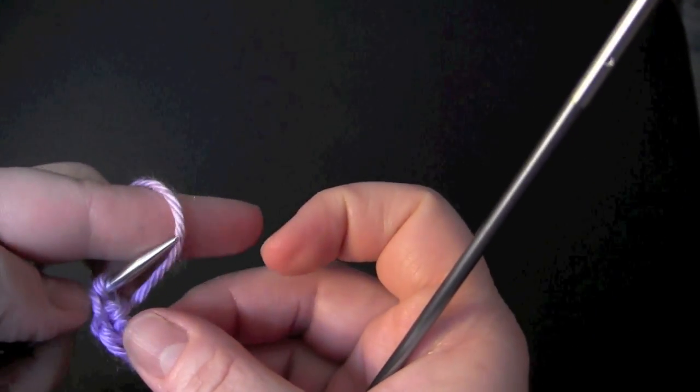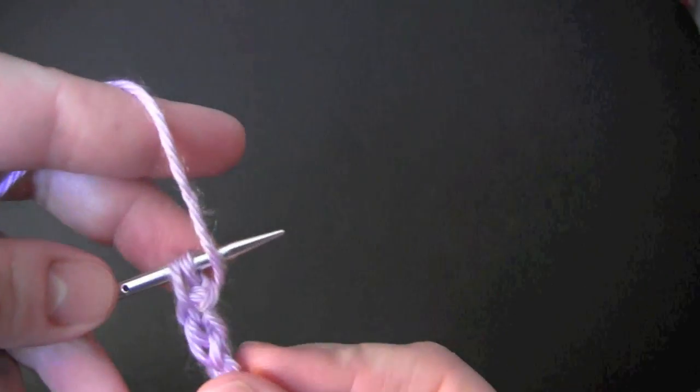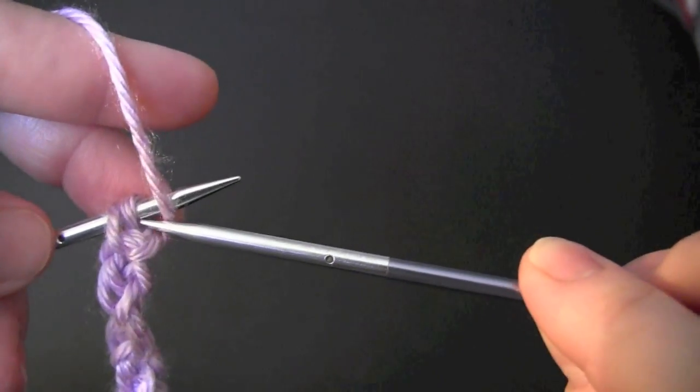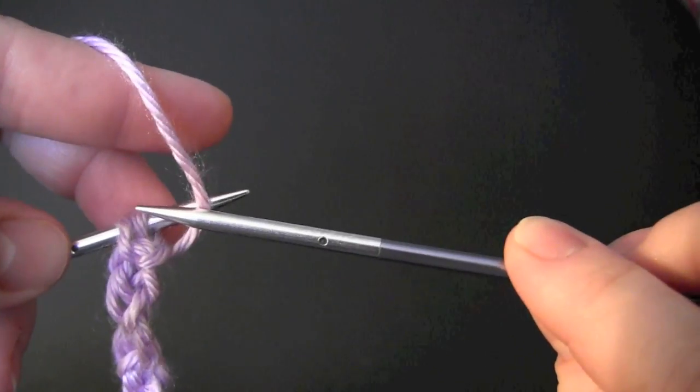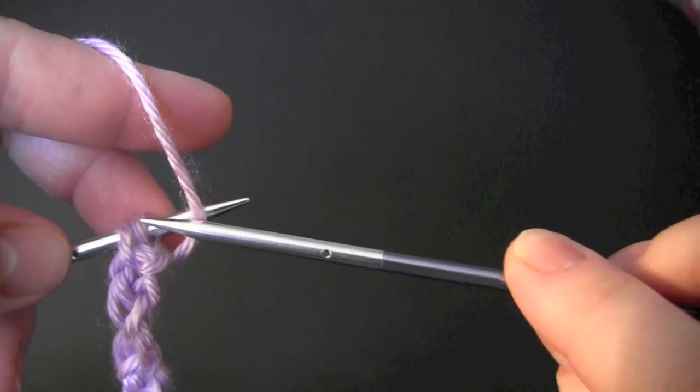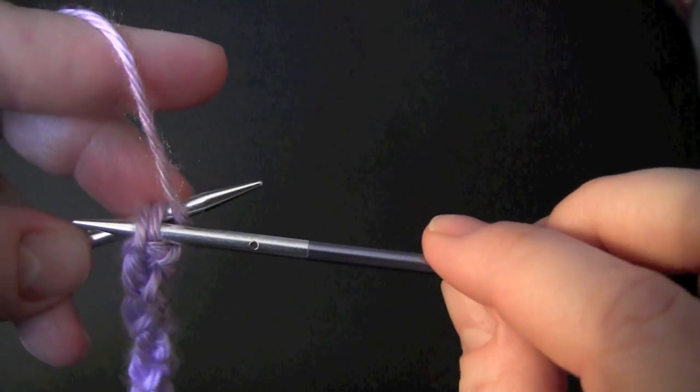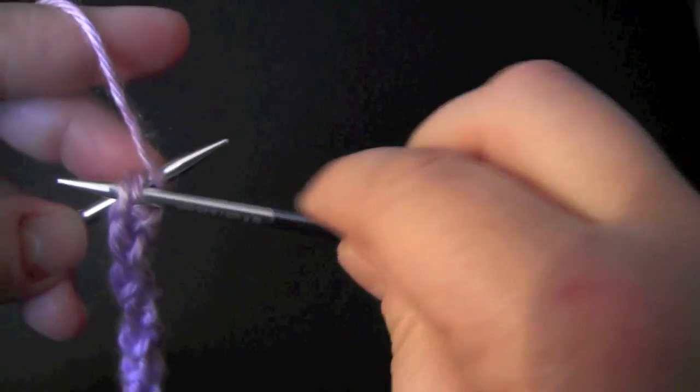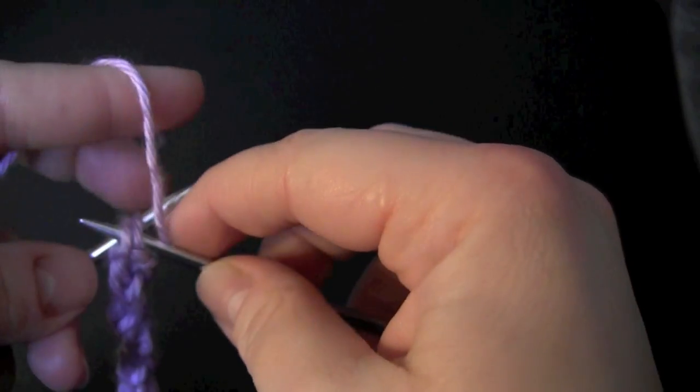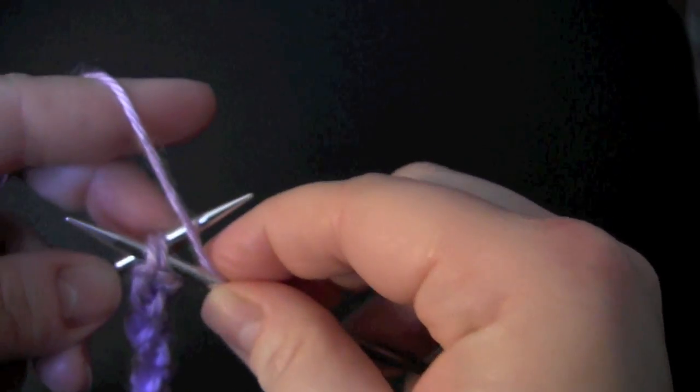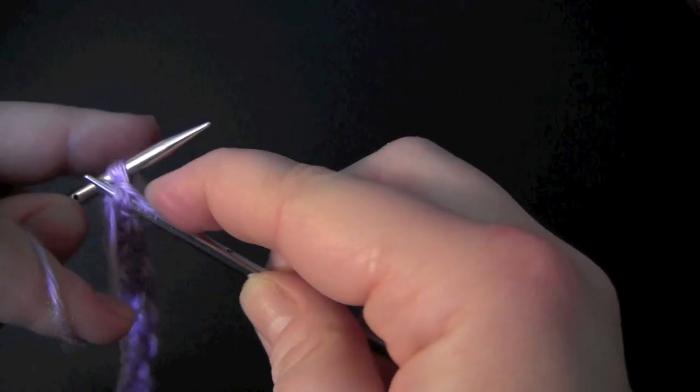Another way that you could do it, you could have your yarn in the front like this, and then when you put your needle in, make sure that your needle goes in front of the working yarn into your two stitches. I'm still going to hold it in place with my right index finger, and then purl them together.